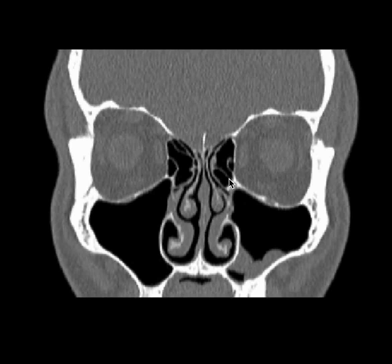These are the ethmoidal air cells. The middle turbinate on the left side is slightly smaller in size and the osteomeatal complex is congested and overcrowded.